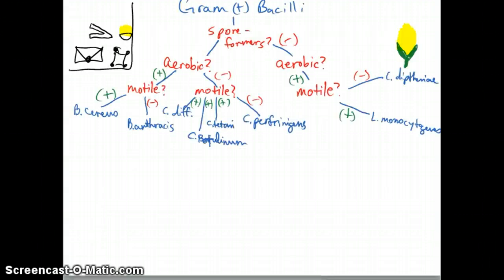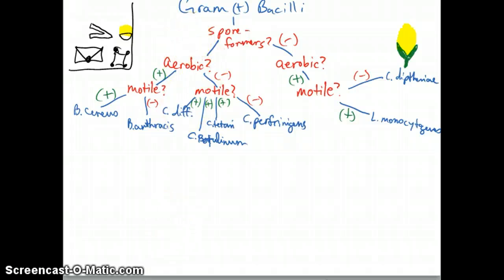Now let's get started on gram-positive bacilli and filaments. The way we're going to differentiate those is we're going to see if they're spore formers or not. If they are spore formers, that's what we're going to go for right now. Then you're going to differentiate further by if they are aerobic or not.